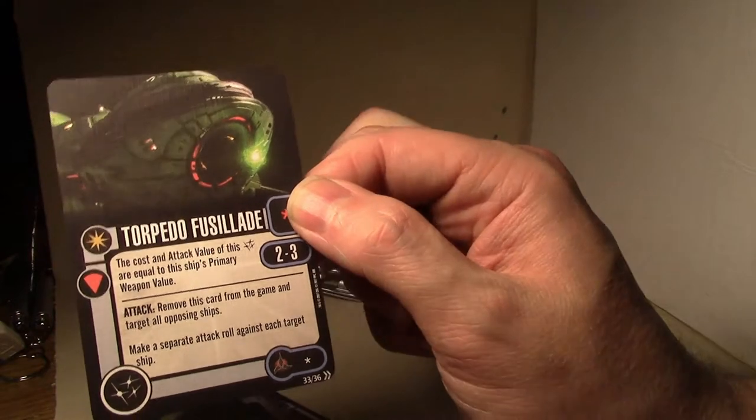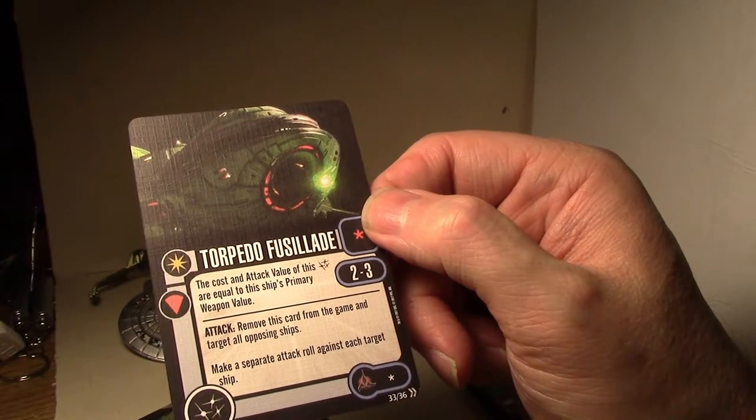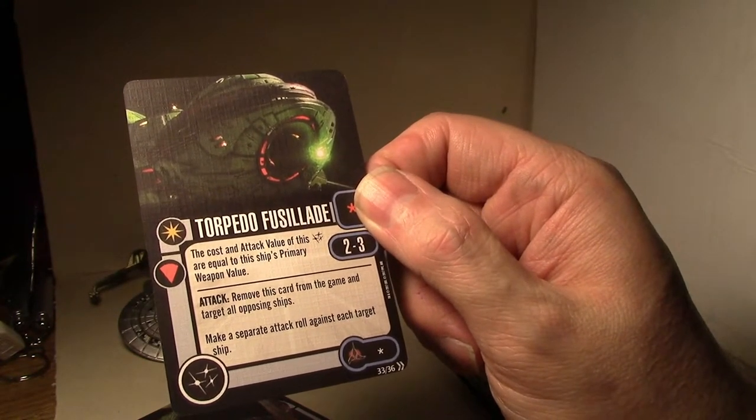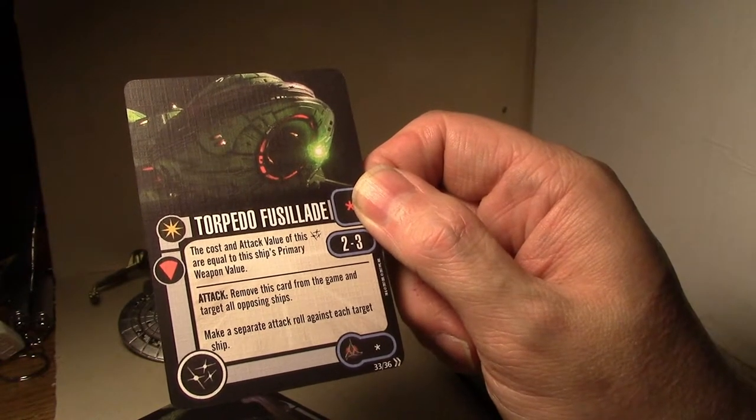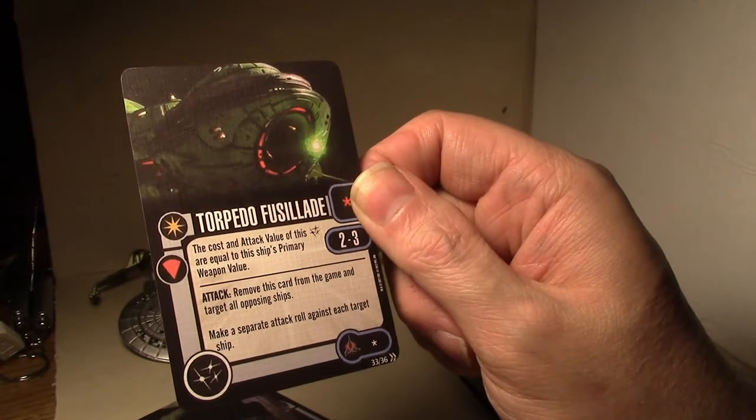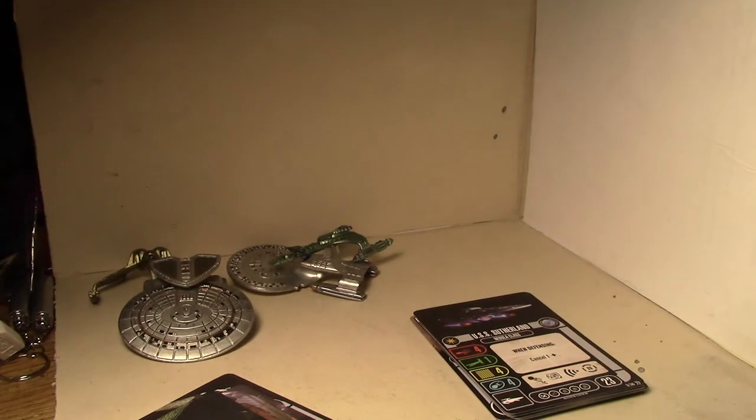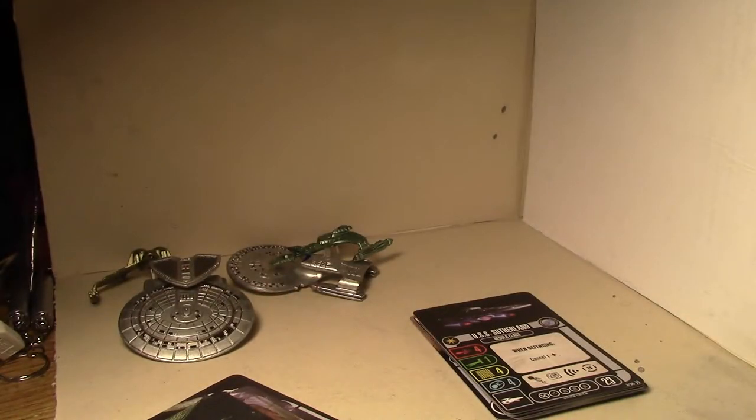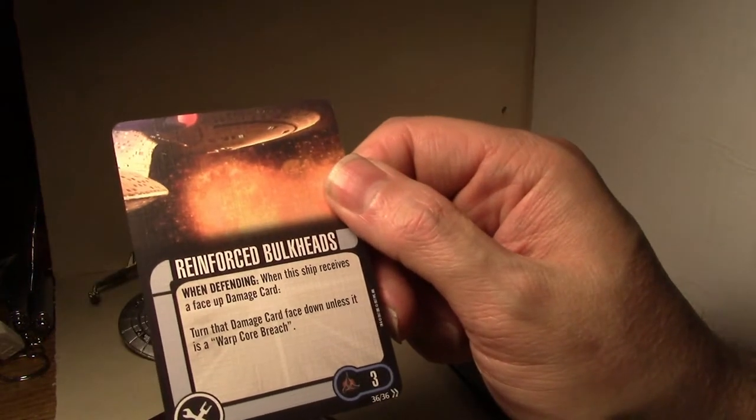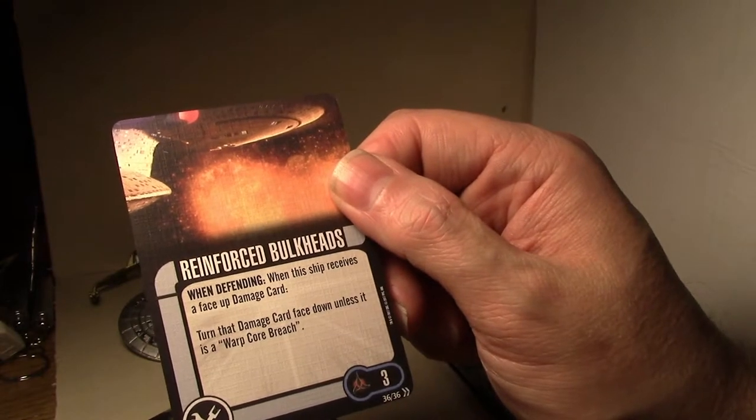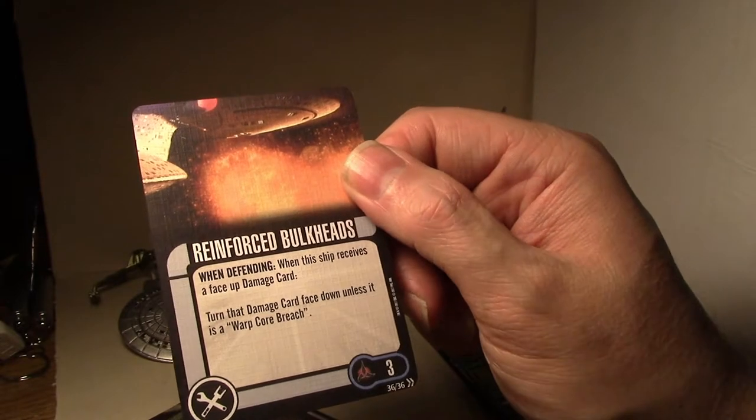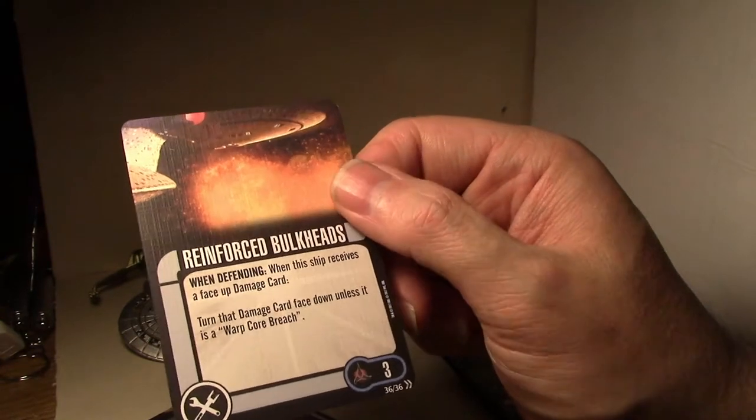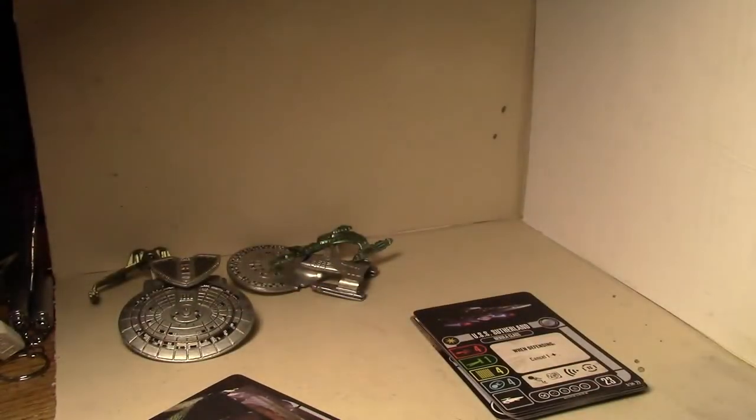Torpedo Fusillade. I'm not even sure how to pronounce that. The cost and attack value of this weapon is equal to the ship's primary weapon value. Attack. Remove this card from the game. It's not discarded. And target all opposing ships. Make a separate attack roll against each target ship. So this is one of those things that you have to get in the right spot to use it. But it could be quite devastating if you do. Klingon Helmsman. Place two time tokens on this card. And perform a scan action as a free action. If you need to do scans on Klingons for some reason. Reinforced bulkheads. When defending the ship receive a face up damage card. Turn that damage card face down unless it's a warp core breach. That's a really good three points. Especially for Klingons with their cloak ships. Might even be good on the scimitar. So just ignore crits basically. What you get for that. It's totally worth three points.